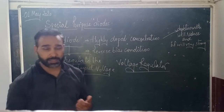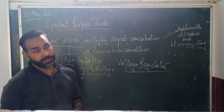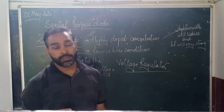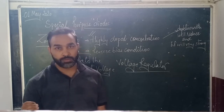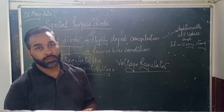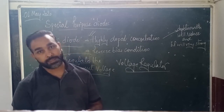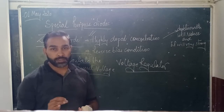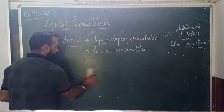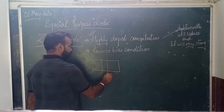First, let's talk about the zener diode. The zener diode is basically the same kind of p-n junction diode but with special characteristics. For example, it is a highly doped diode. For all the special purpose diodes you will be reading, you have to know a few things: whether it is highly doped, moderately doped, or lightly doped, and about the electric field generated by that particular diode.